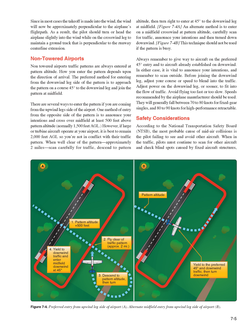Non-towered airports: Traffic patterns are always entered at pattern altitude. How you enter the pattern depends upon the direction of arrival. The preferred method for entering from the downwind leg side of the pattern is to approach on a course 45 degrees to the downwind leg and join the pattern at midfield. If coming from the upwind leg side of the airport, one method is to announce your intentions and cross over midfield at least 500 feet above pattern altitude, normally 1,500 feet AGL. However, if large or turbine aircraft operate at your airport, it is best to remain at 2,000 feet AGL so you are not in conflict with their traffic pattern. When well clear of the pattern, approximately 2 miles, scan carefully for traffic, descend to pattern altitude, then turn right to enter at 45 degrees to the downwind leg at midfield.